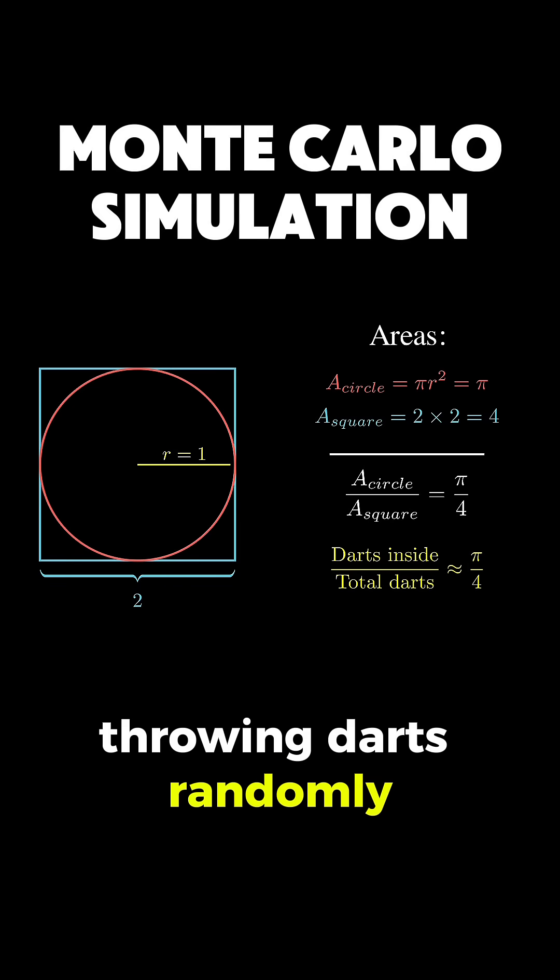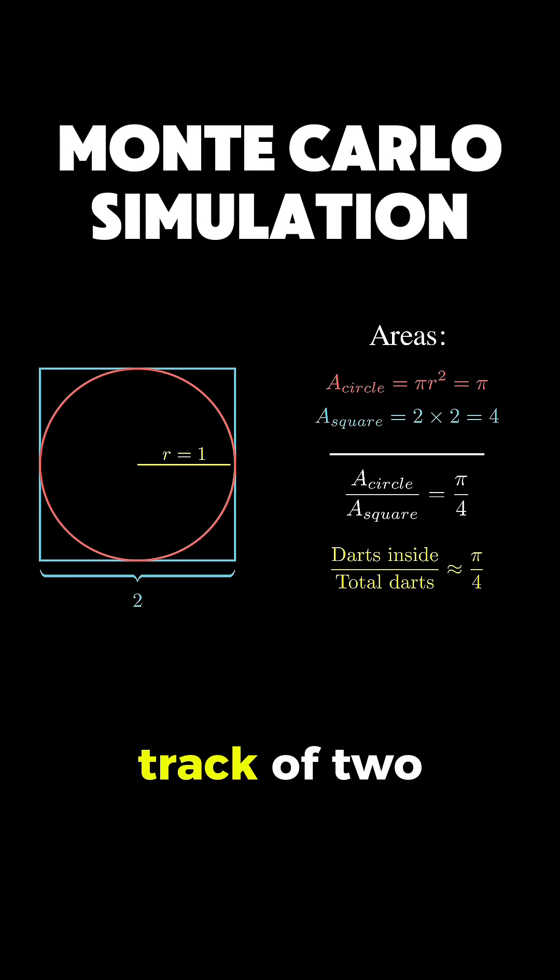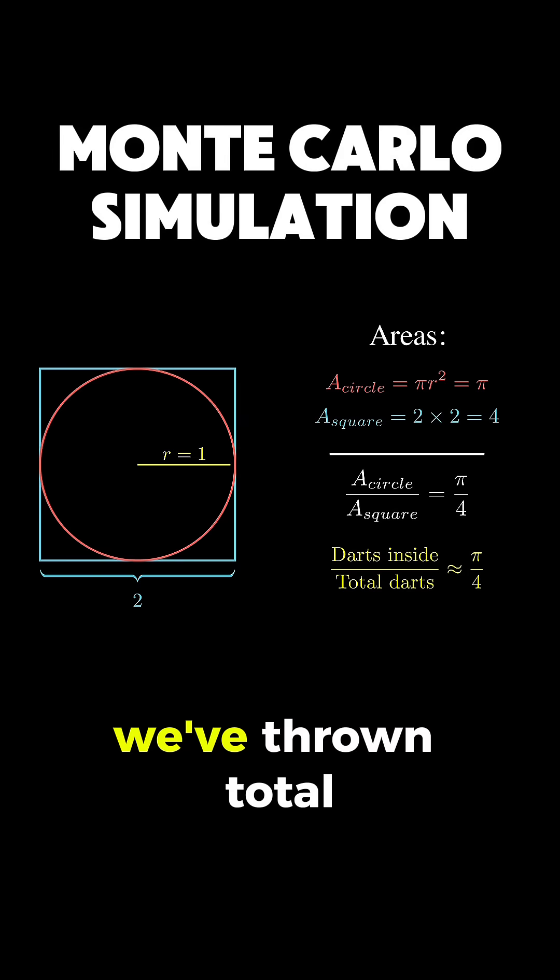So we start throwing darts randomly at our board and we keep track of two numbers: how many land inside the circle and how many we've thrown total.